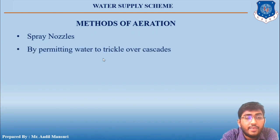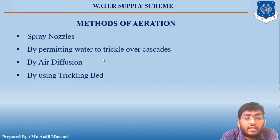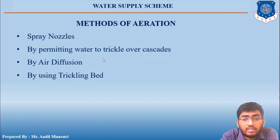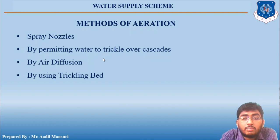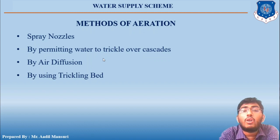The different methods of aeration include: spray nozzles, permitting water to trickle over a cascade, adding diffusion, and using trickling beds. In all these methods, contact between air and water is made either by formation of small drops or thin layers, or by means of formation of small air bubbles.